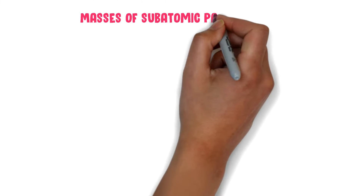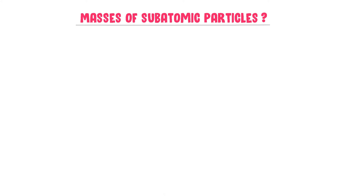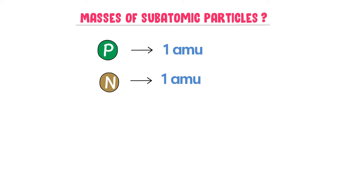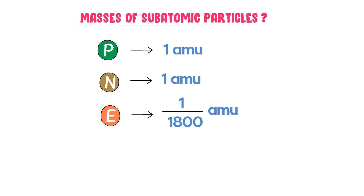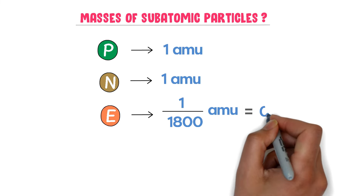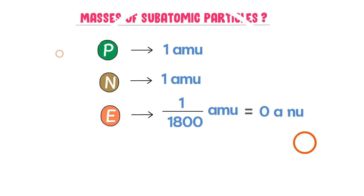Finally, what about the masses of subatomic particles? The mass of a proton is 1 amu or 1 atomic mass unit. The mass of a neutron is also 1 amu. The mass of an electron is 1/1800 amu, which is so small that it is considered approximately 0 atomic mass unit.